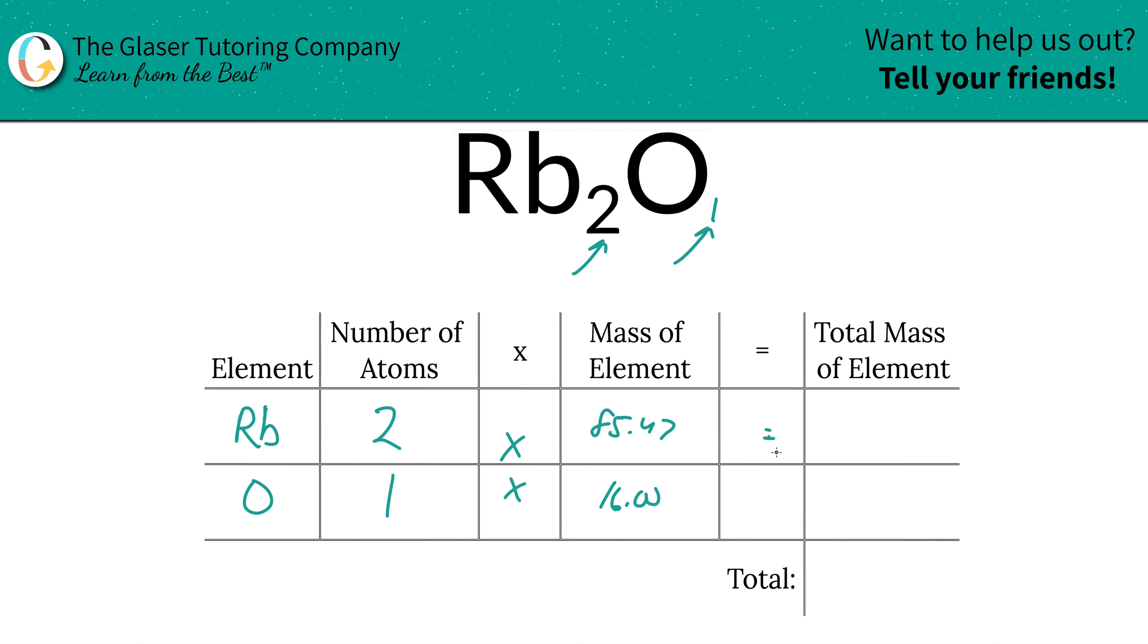And then to find the total mass of the element in the compound, we're simply going to multiply this row across. So the total mass of rubidium there is going to be 170.94 units of mass. Oxygen is going to be 16.